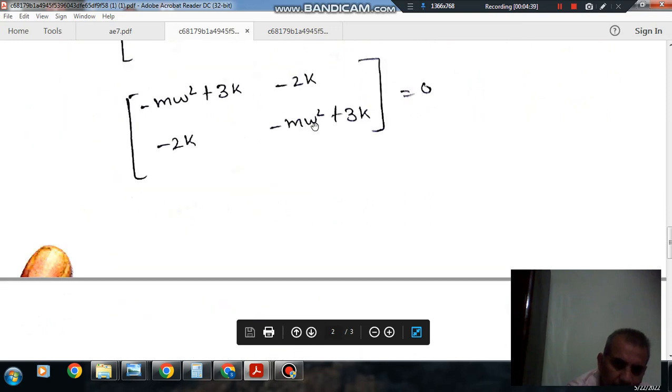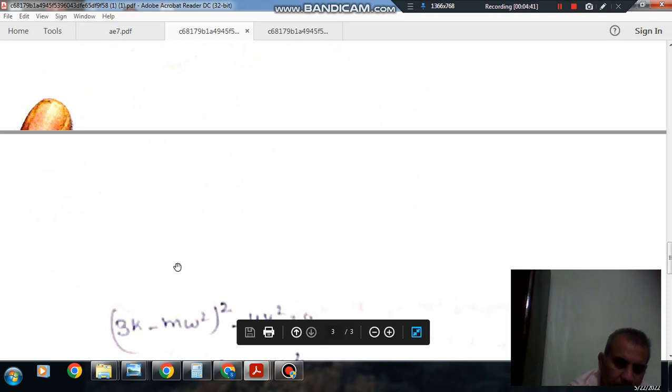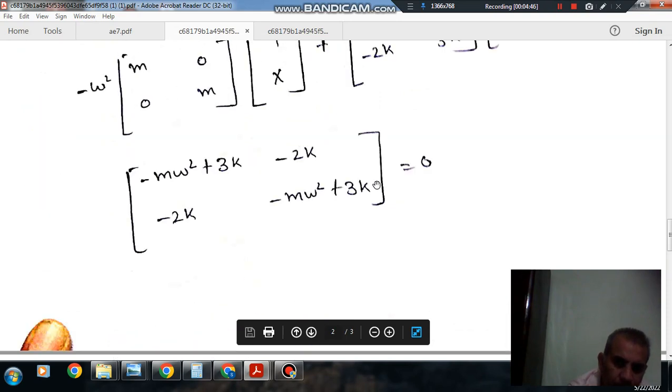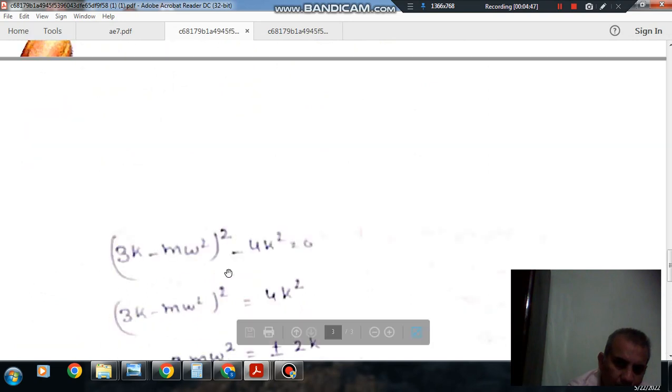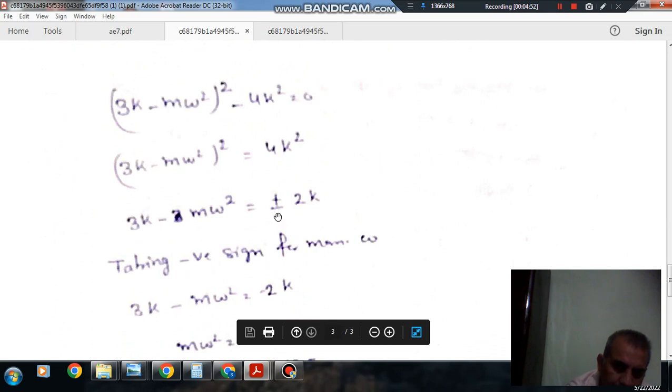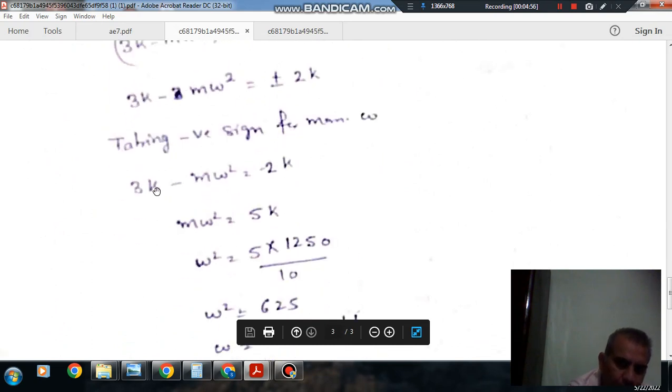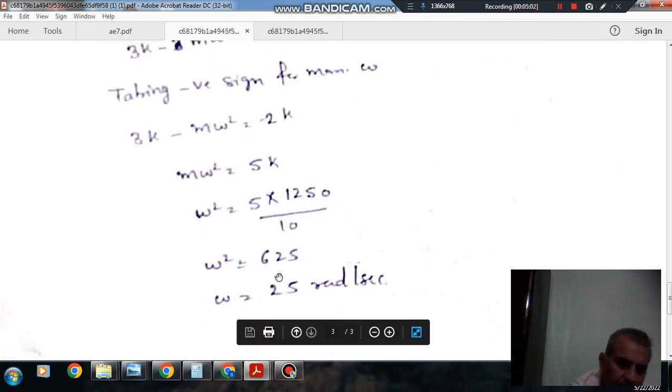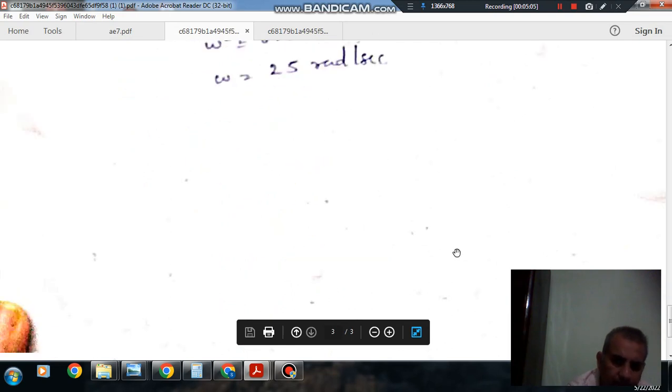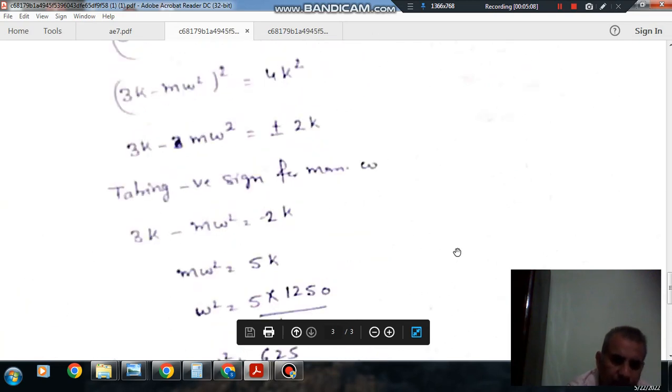Solving this and taking the higher value for the highest omega, putting the value of k and m where k is 1250 and m is 10, we get ω² = 25 times 14. So omega squared is 25 times 14.